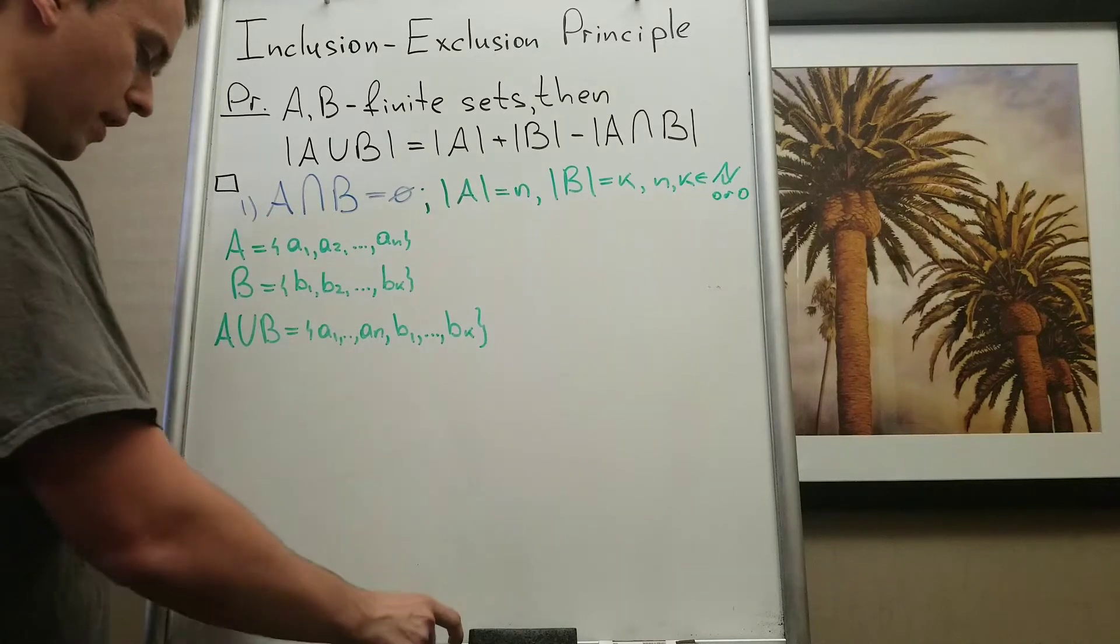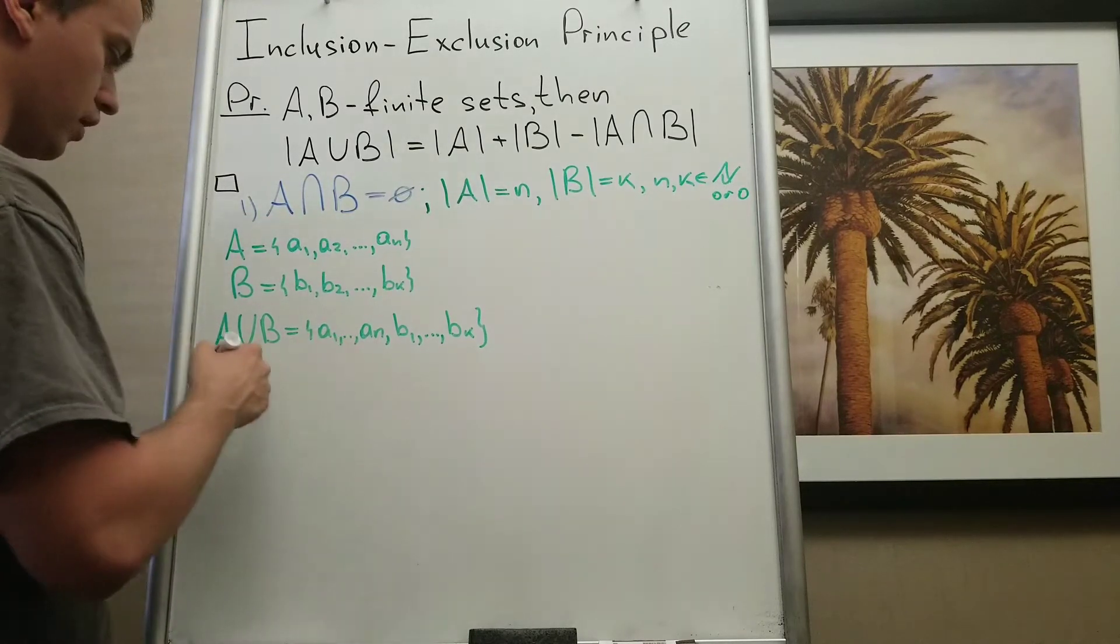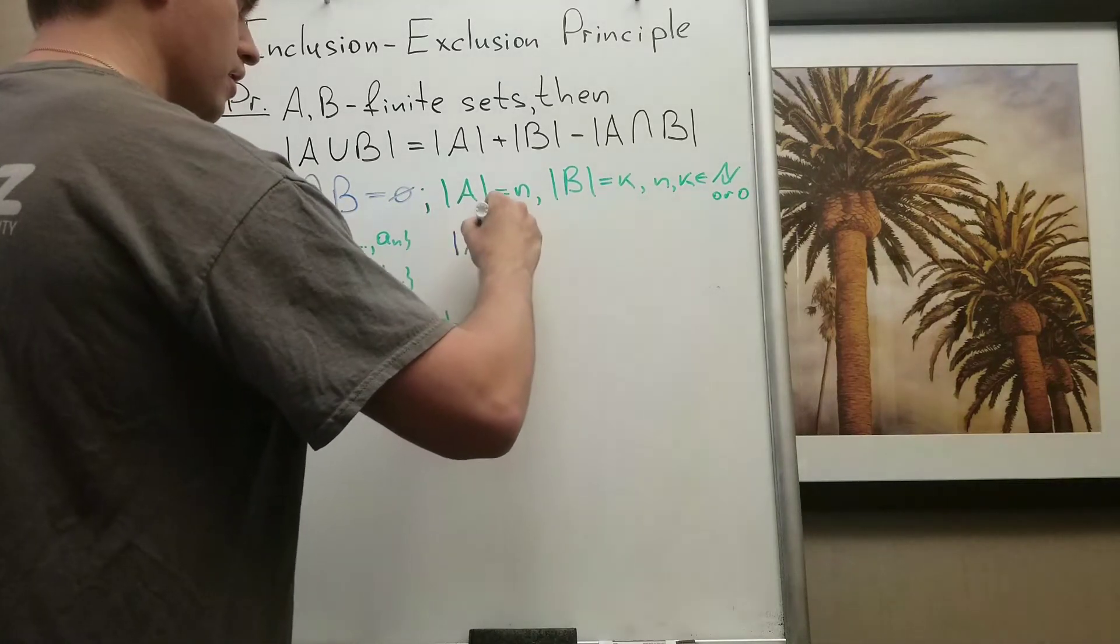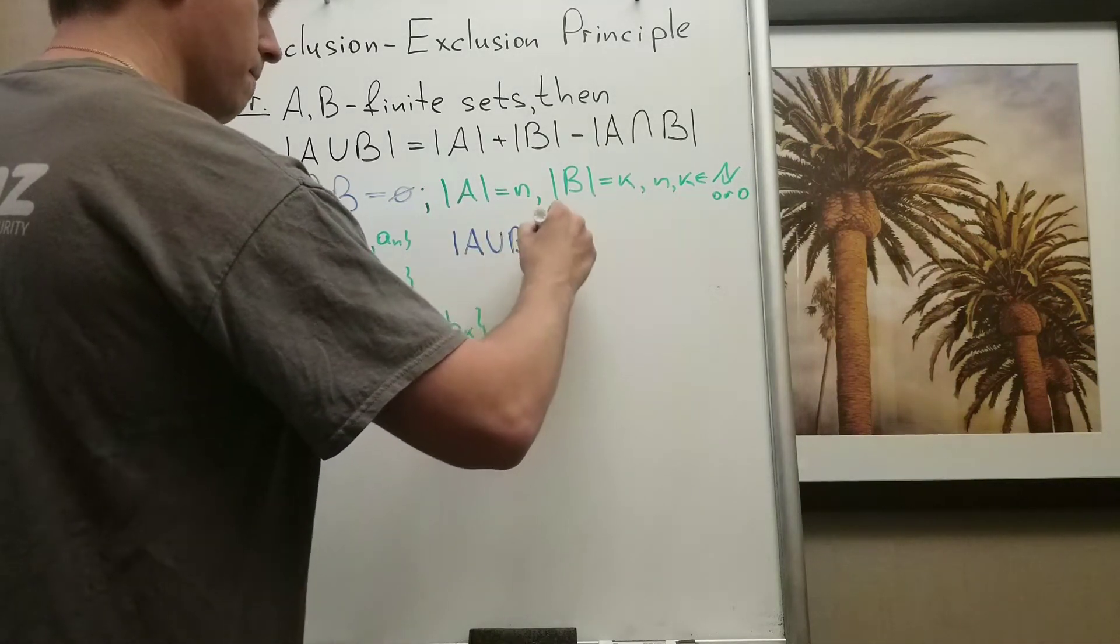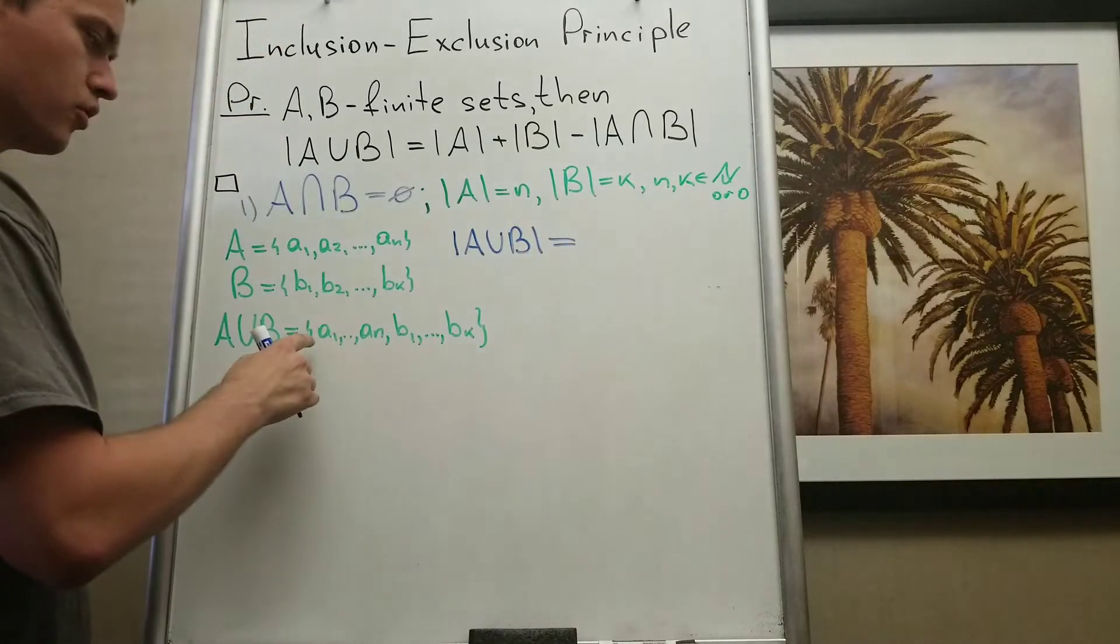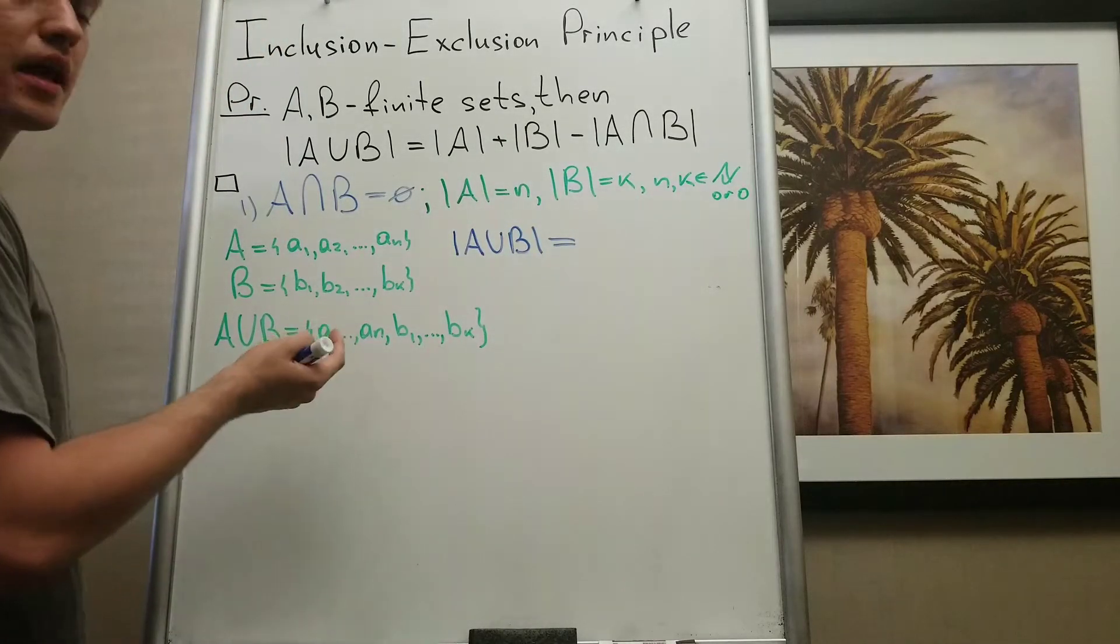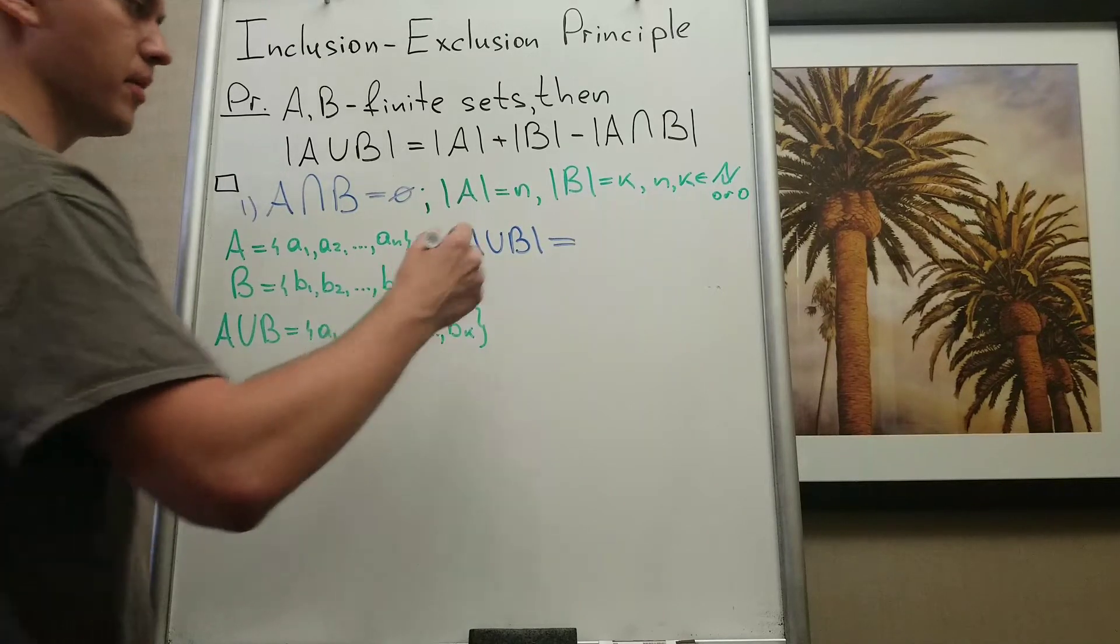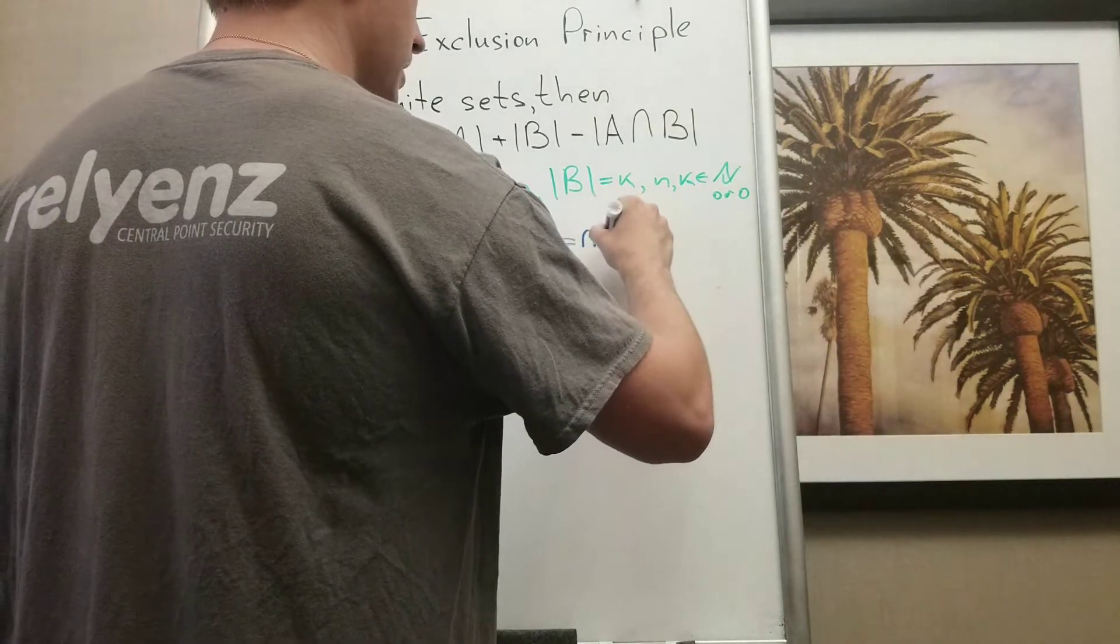And then by definition of cardinality, if you consider A union B, you can count that you're going to have exactly n plus k elements. Because we're going to have n distinct a's and k distinct b's. So it equals n plus k.